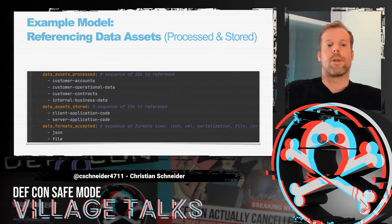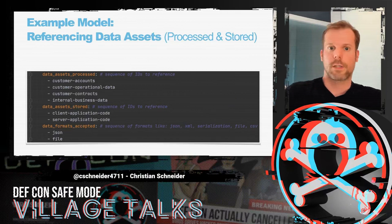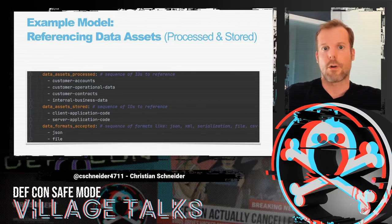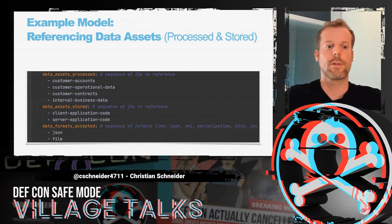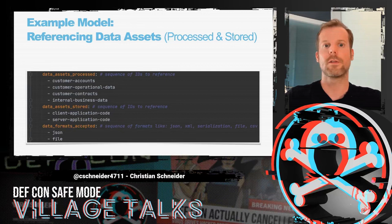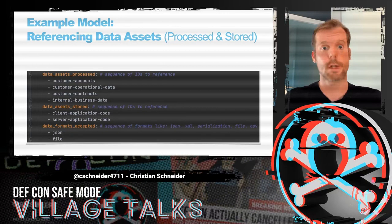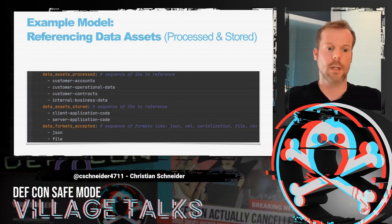You can reference data assets that are processed or stored on a technical asset just by their ID. From that ID referencing, ThreadGile learns the distribution of data and which data is processed on those kinds of technical assets.